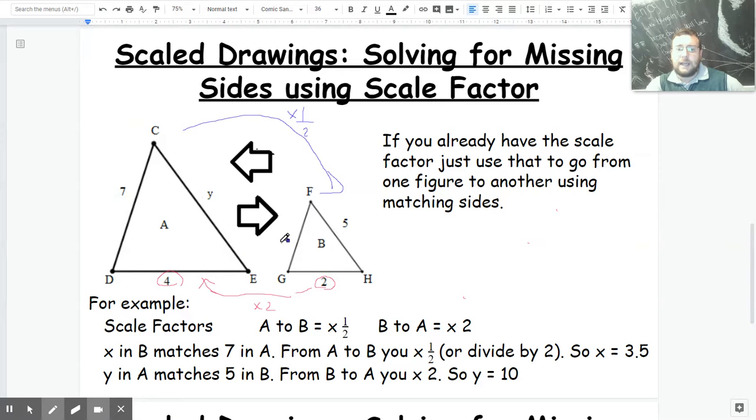So when I try to find X, I have to work with it based on the 7 because the 7 is matched to it. If I'm trying to figure out what X is, I have to work with the 7, and then I can use the scale and go in the same direction.